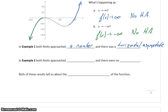In example 2, both of those limits were approaching either positive or negative infinity, and there were no horizontal asymptotes. So both of these results are telling us about the end behavior of a function.